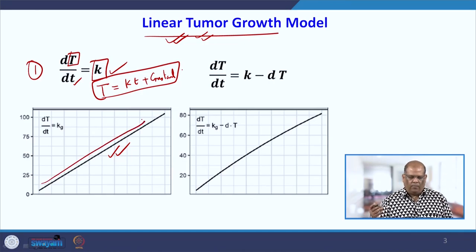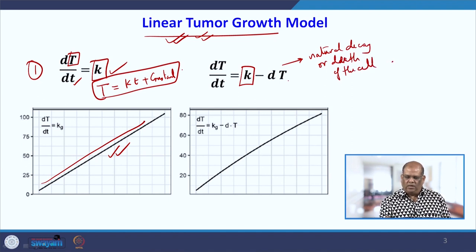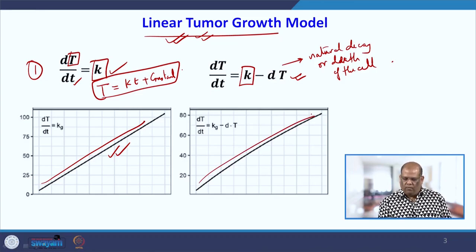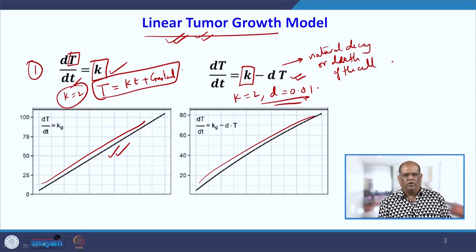Sometimes cells also kill themselves — this is called the natural decay or natural death of the cells. In that case, you have the growth constant and this natural decay term d. With the value of k equal to 2 for the first case, and k equal to 2 and d equal to 0.01 for the second case, plugging these values into the differential equation gives you these two kinds of curves.